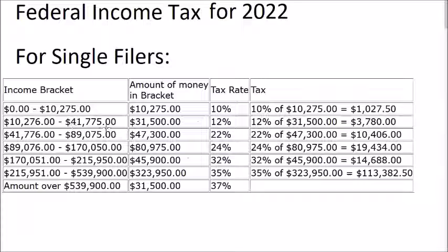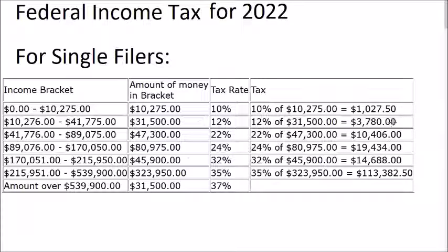Going from $10,276 to $41,775, the difference is $31,500. In this bracket the tax rate is 12%, and 12% of $31,500 is $3,780.